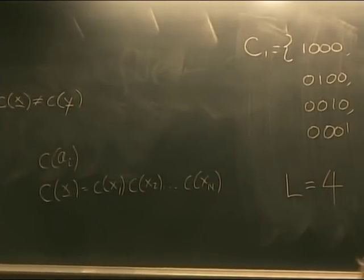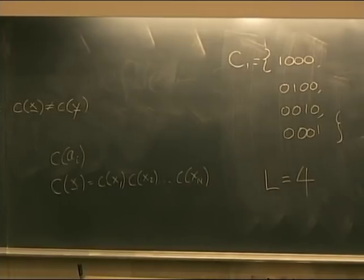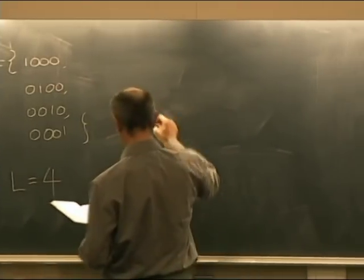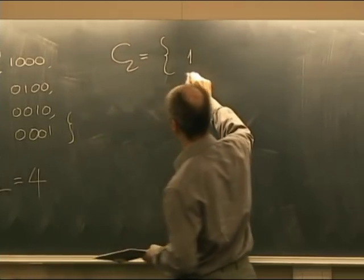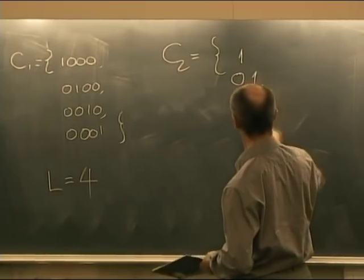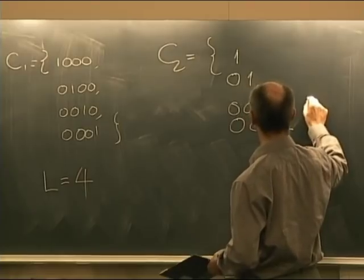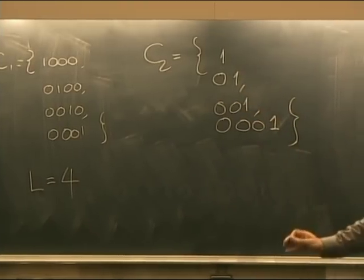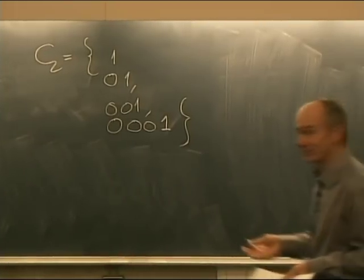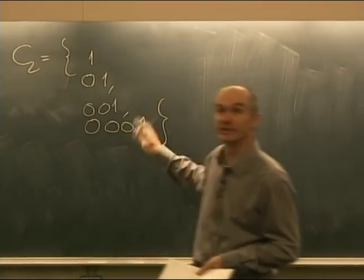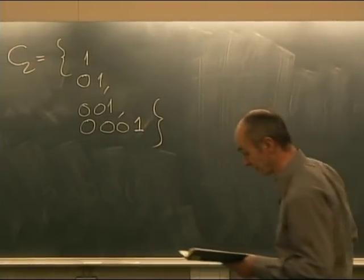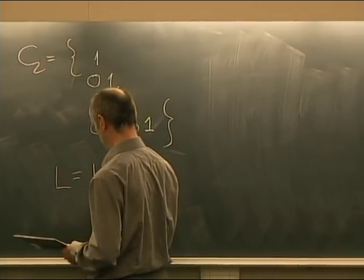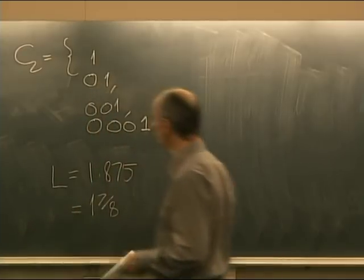The suggestion is to remove all the trailing zeros. The recipient can still figure out boundaries by looking for the ones, since the one comes at the end of each codeword — so this is still self-punctuating and easy to decode. The expected length of this code C2 is 1 and 7/8 bits.